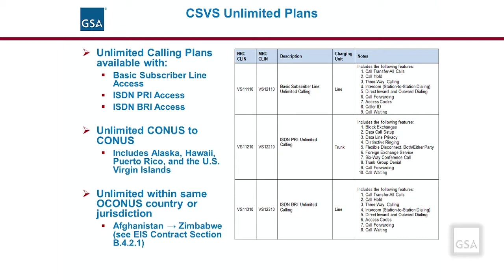The unlimited calling is confined to within the same country or jurisdiction. A list of the countries and their associated jurisdiction IDs that support OCONUS unlimited calling plans are listed in Section B of the EIS contract.